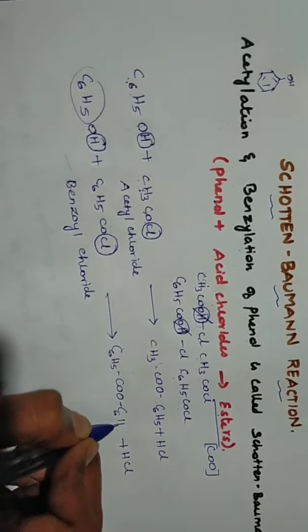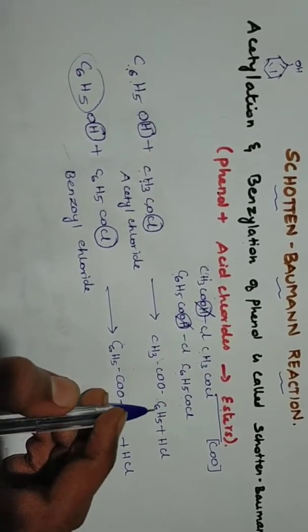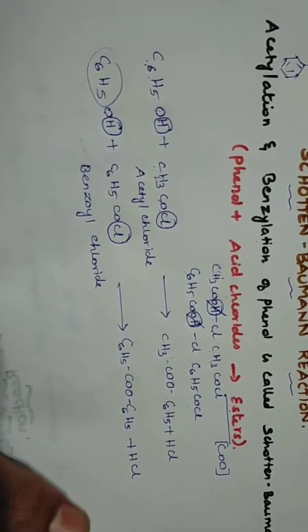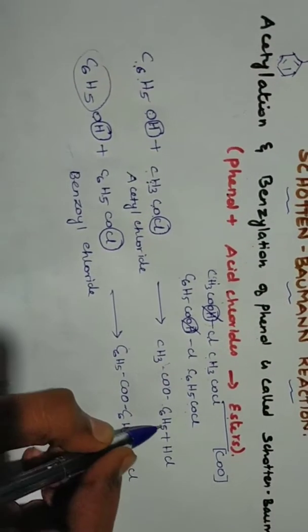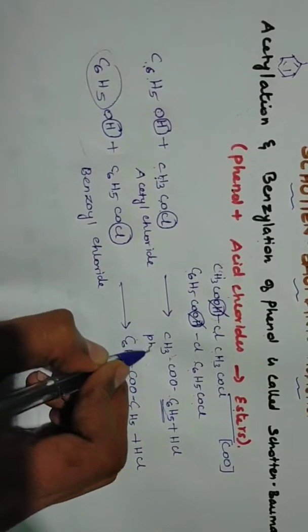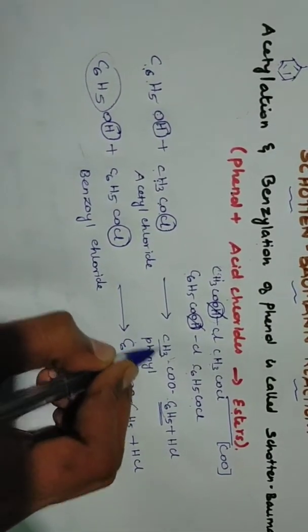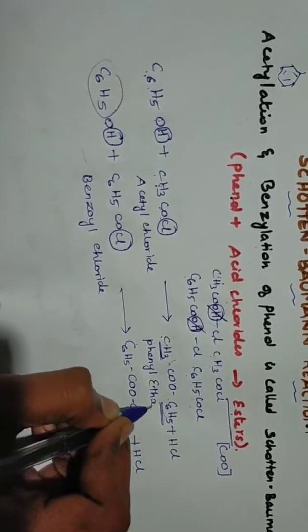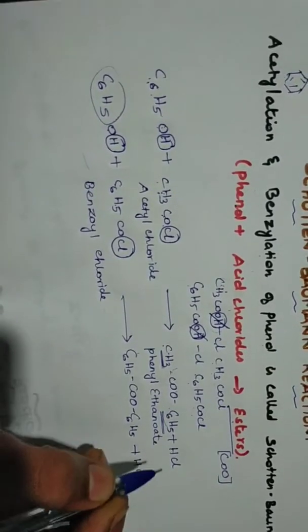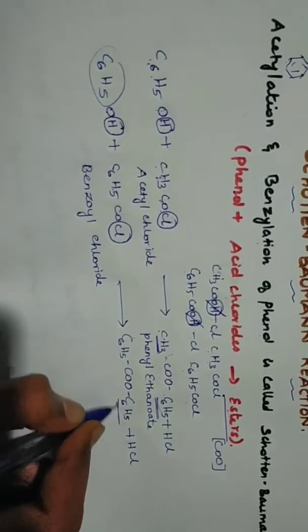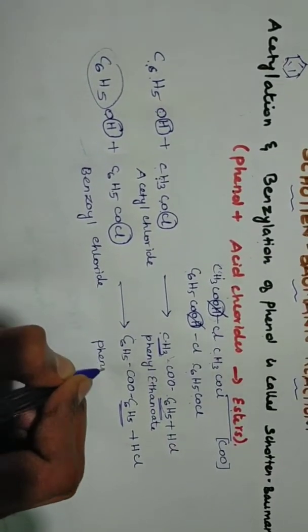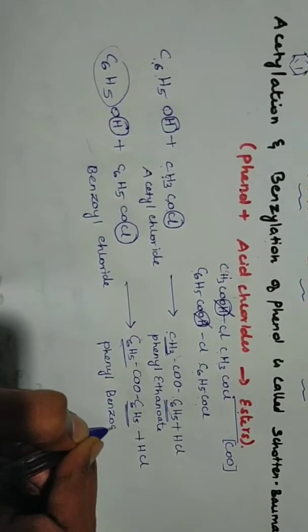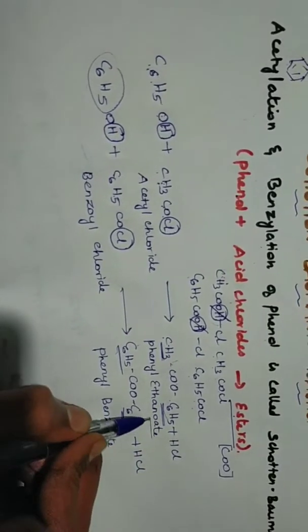Now we call C6H5, one is OAT. So first we call phenyl group, phenyl. This is one, two carbon. Phenyl acetate. This is phenyl group. So this is benzoin group, benzoate.